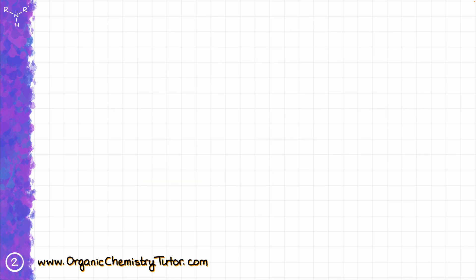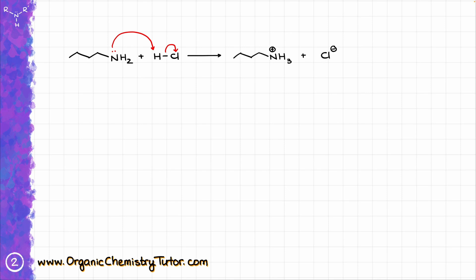Let's look at a simple acid-base reaction. Here, I have butylamine reacting with HCl as my acid. The butylamine is going to be my base, so the nitrogen is going to get the proton from my HCl, and that is going to give me the corresponding product. This is a very simple reaction, and I would fully expect you to be able to write it on your own.